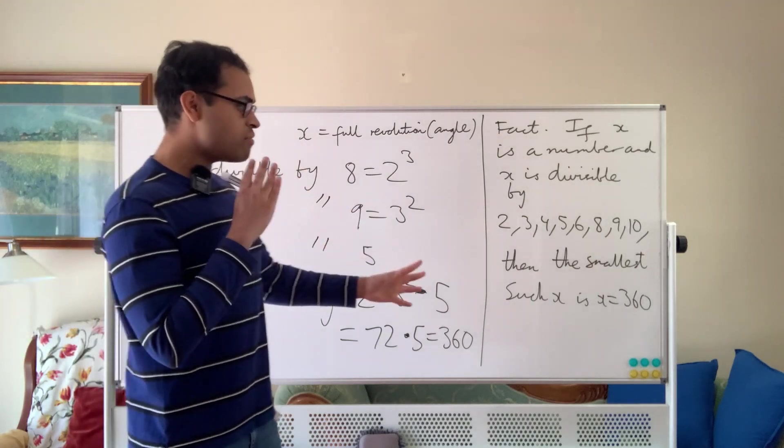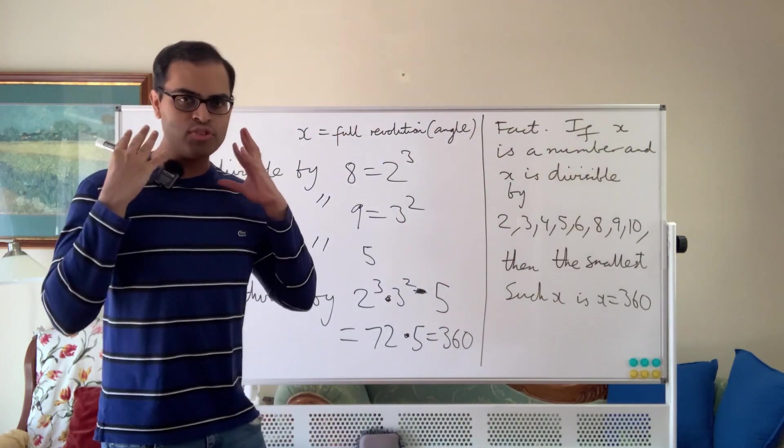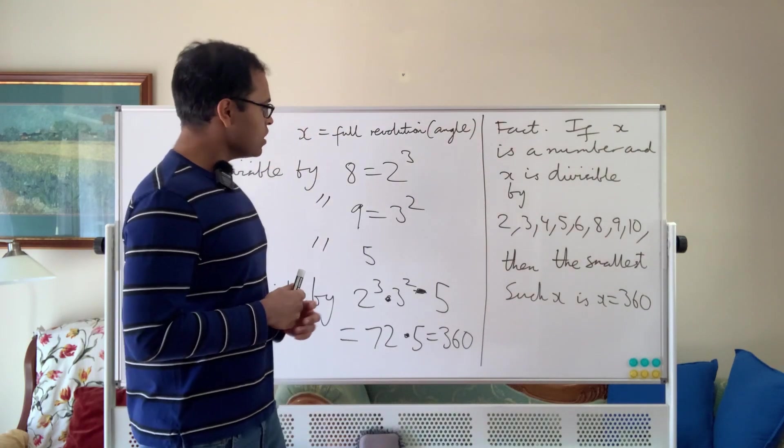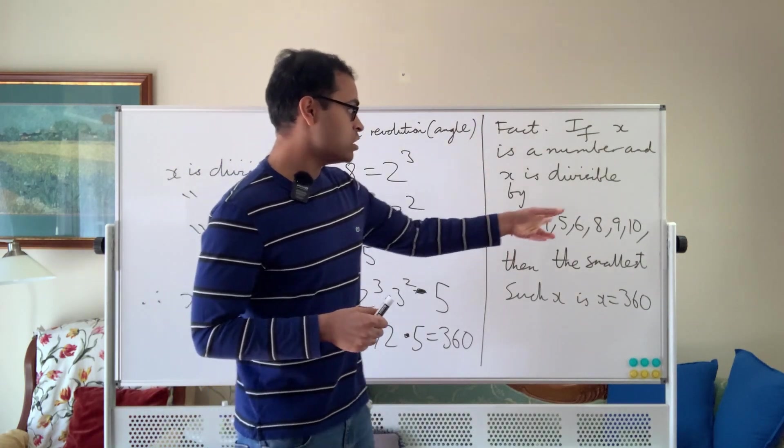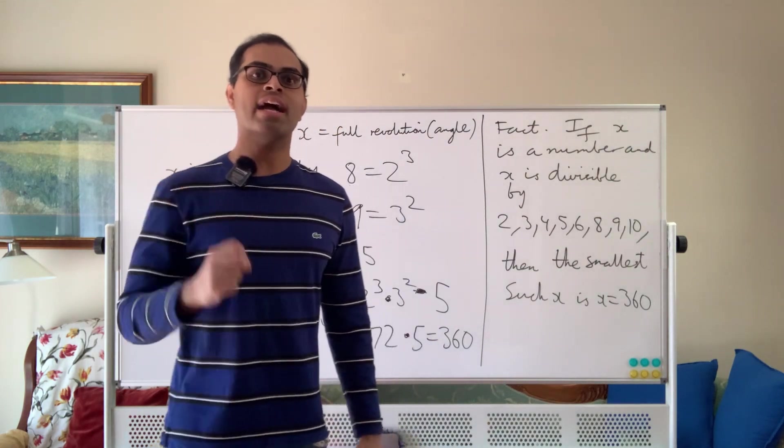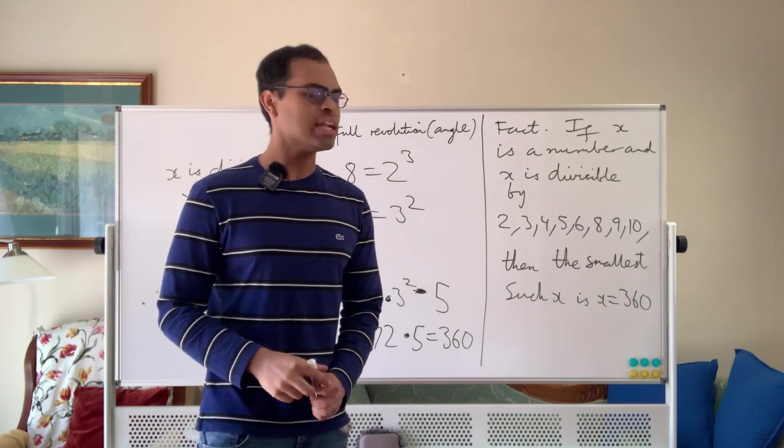So one real good advantage of 360 is it's small enough that we can sort of humanly handle it and get used to it, but not too large. And so in fact, 360 is also divisible by 12, which is also cool, because 360 by 12 is 30 degrees, which is a pretty important angle in trigonometry, for example, if you've studied that.